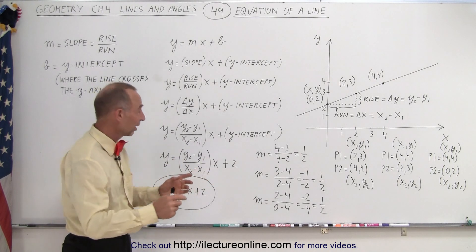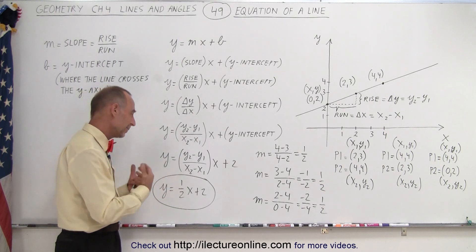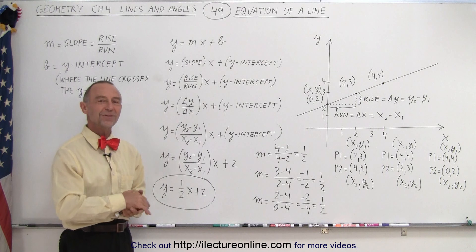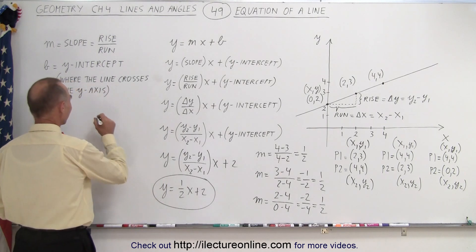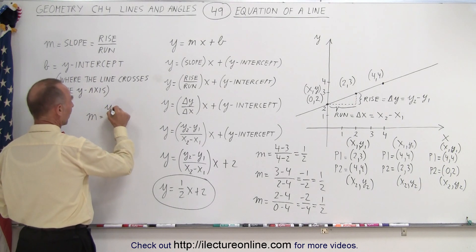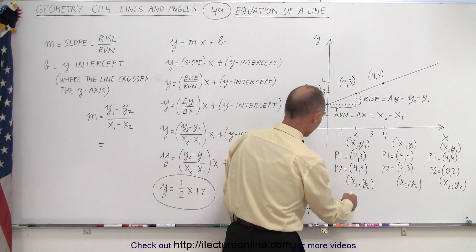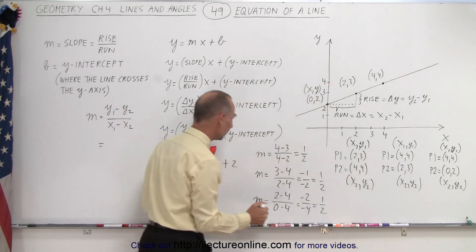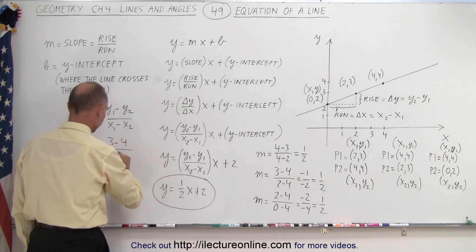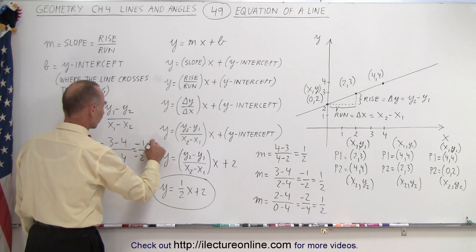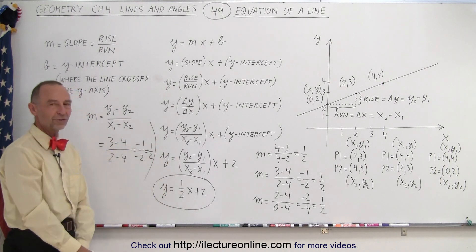The question is: can we reverse the order and write y1 minus y2 over x1 minus x2? Technically you could — you'll get the same value — but that is considered bad form. We typically don't want to do that; it's always the second one minus the first one. Let's try it to confirm: y1 minus y2 is 3 minus 4, divided by x1 minus x2 which is 2 minus 4, giving minus 1 over minus 2, which equals one half. So you do get the same result, but I prefer you stick to the standard format.